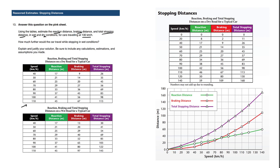So 130 km an hour, looking at the table on the left here, is not provided, so we have to figure it out. How much further would the car travel while stopping in wet conditions? Explain and justify your solution. Be sure to include any calculations, estimations, and assumptions you've made.